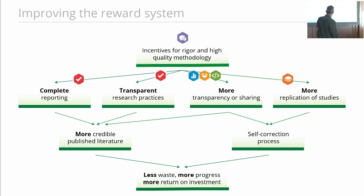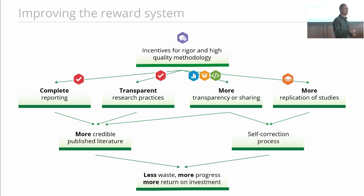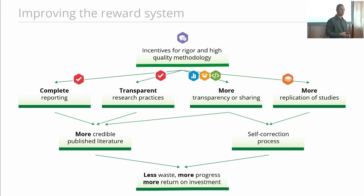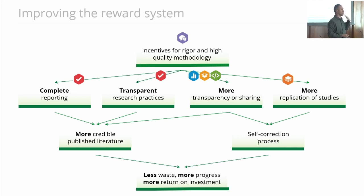And then finally, the model of registered reports goes after that core initial incentive. What does it take to get a publication? We don't try to remove publication as the incentive — that would be very hard to change. But if we change what it takes to get a publication — to be about asking important questions and applying rigorous methods to test those questions, and not about the outcomes — then we fundamentally change the incentives for researchers. And Leslie will talk more about that this afternoon.